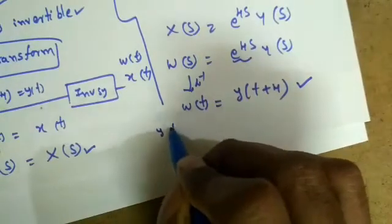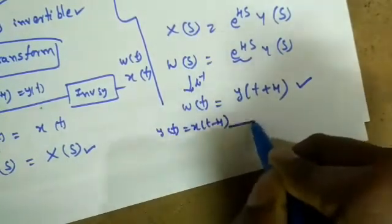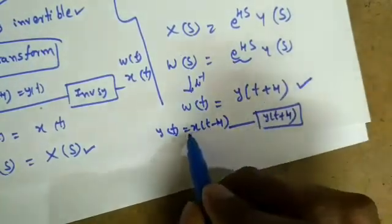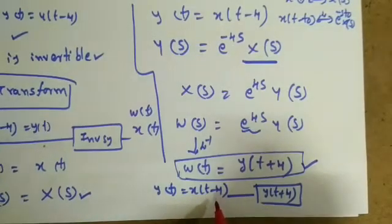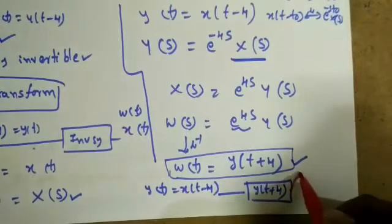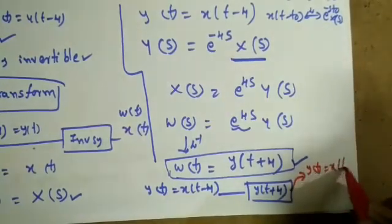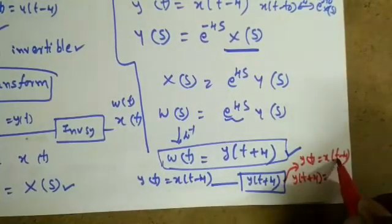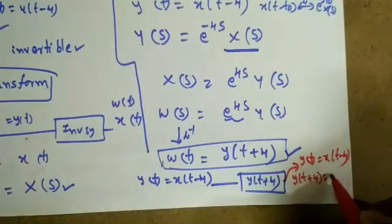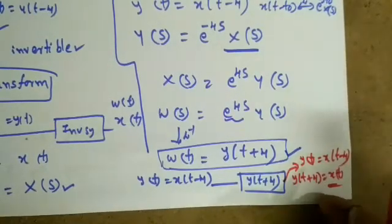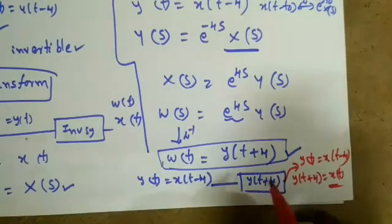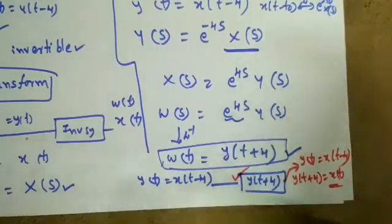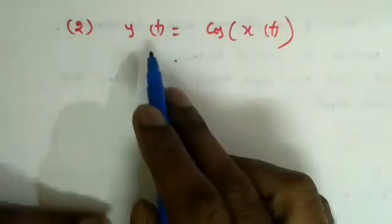Let's verify: y(t) = x(t-4). What is y(t+4)? Substitute t with (t+4): y(t+4) = x((t+4)-4) = x(t). So I am able to recover my original signal. The inverse of the system is simply w(t) = y(t+4), which is a time advance by 4.